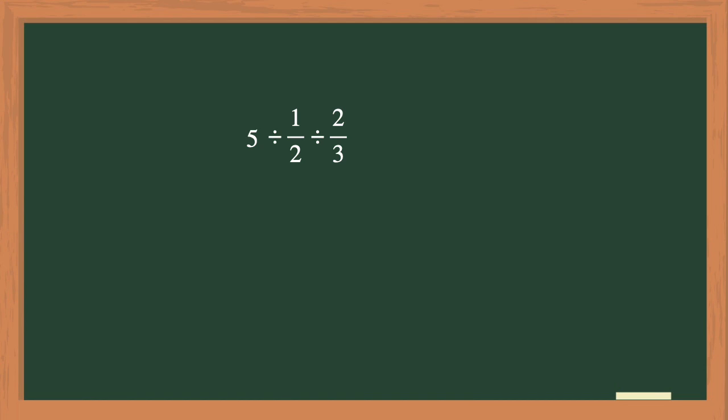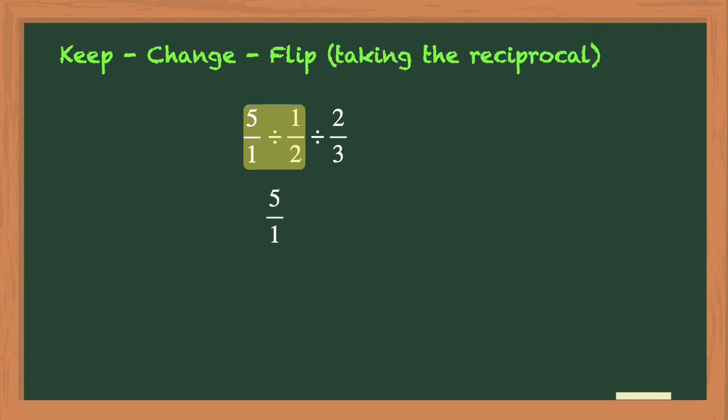So the first thing to do here is to rewrite that whole number of 5 into the equivalent fraction of 5 over 1. Then since you need to divide from left to right, the first pair of fractions you will divide will be 5 over 1 divided by 1/2. Now we'll keep the first fraction of 5 over 1, change the division to multiplication, and flip the second fraction of 1/2 to 2 over 1.